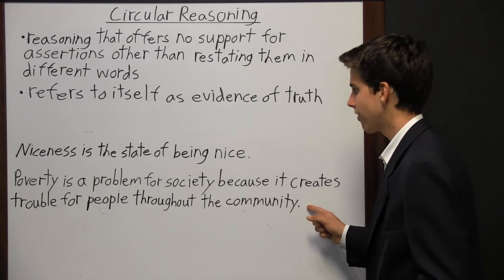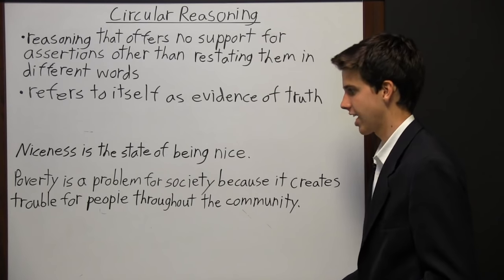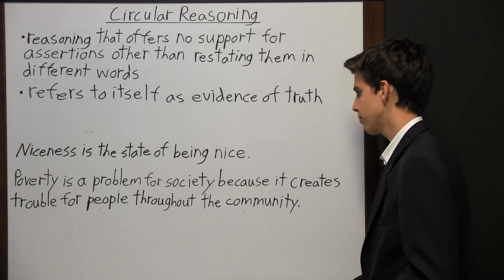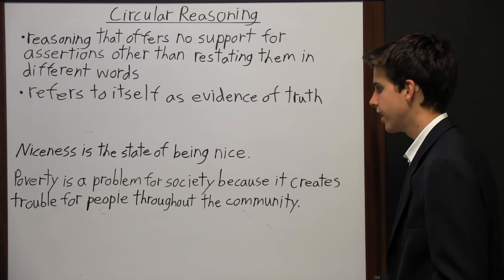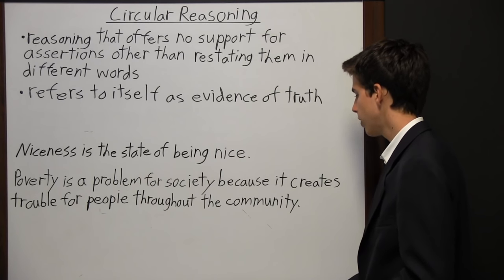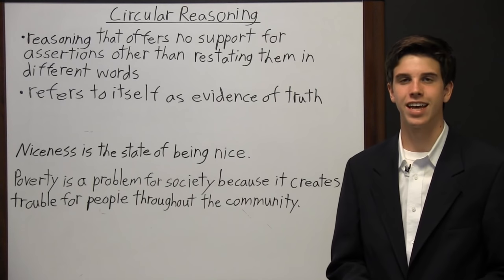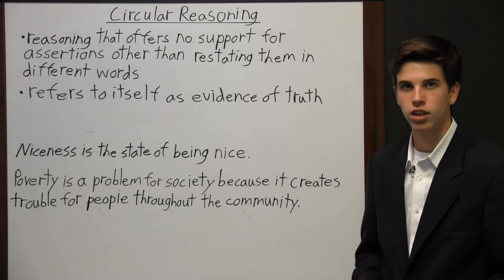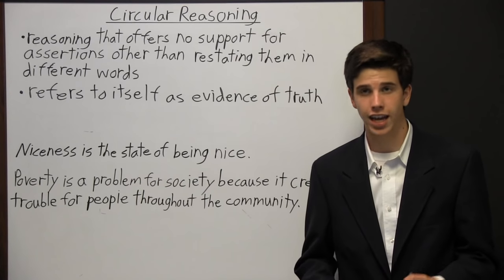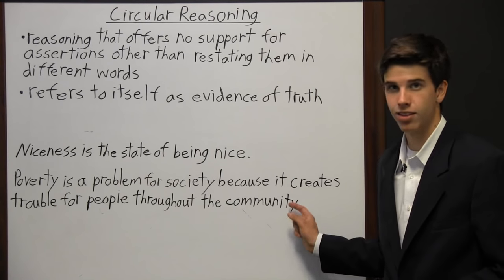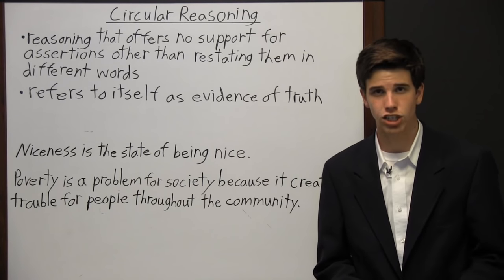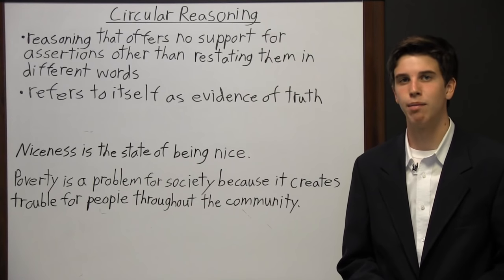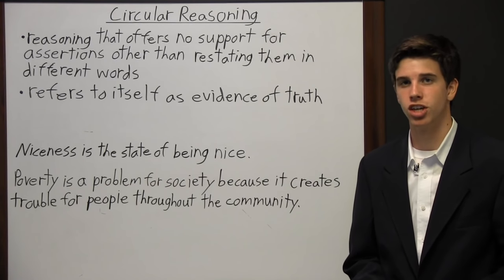A more complicated example — which is what you are more likely to find in your reading — is: 'Poverty is a problem for society because it creates trouble for people throughout the community.' It is redundant to say that poverty is a problem because it creates trouble. When an author engages in circular reasoning like this, it's either because they haven't fully thought out the argument or because they cannot come up with any legitimate justifications.